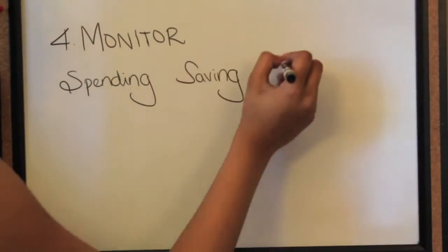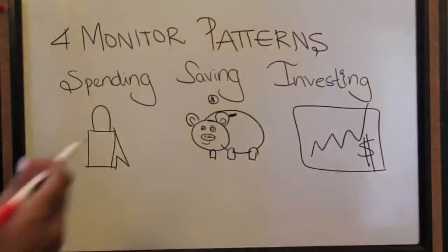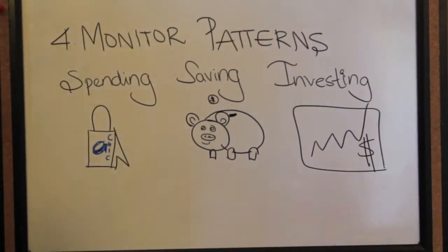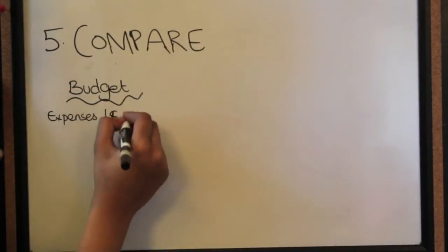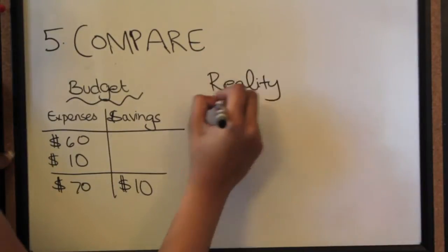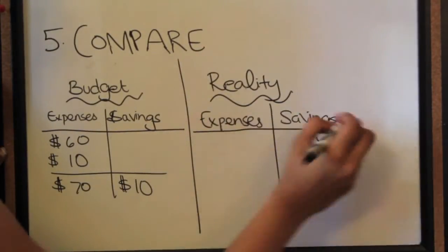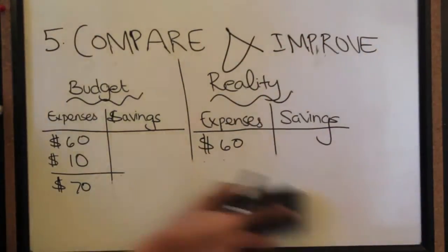Okay, so step four involves monitoring your spending, saving, and investing patterns. So number five is to compare your budget, say what you decided to spend and save, with reality. For example, Jack decided to save $10, but in reality, he ended up saving only $5. And make sure you improve your budget.